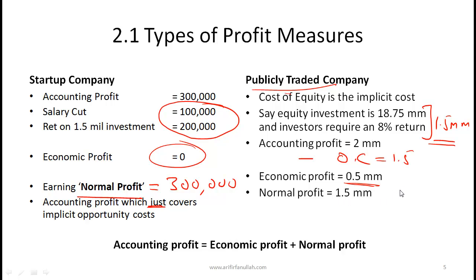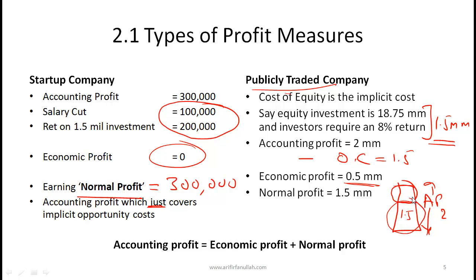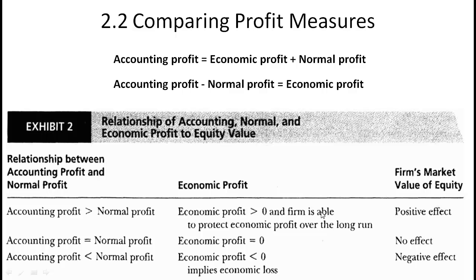Normal profit is $1.5 million. Out of the $2 million accounting profit, $1.5 million is covering the implicit opportunity cost — that is the normal profit. The remaining $0.5 million is the economic profit. So: accounting profit was $2 million, economic profit was $0.5 million, and normal profit was $1.5 million. You need to know these relationships.